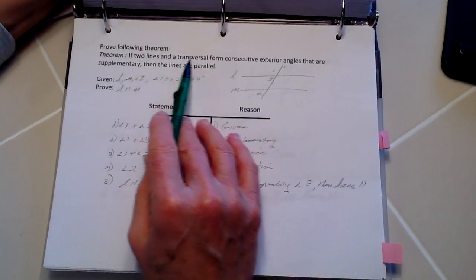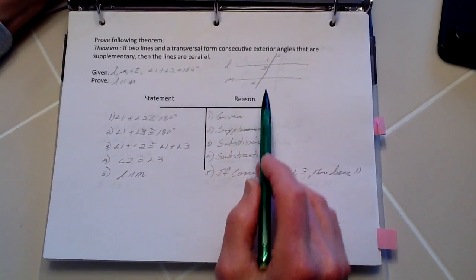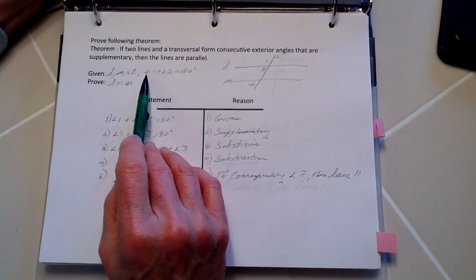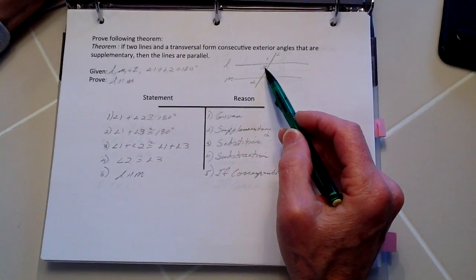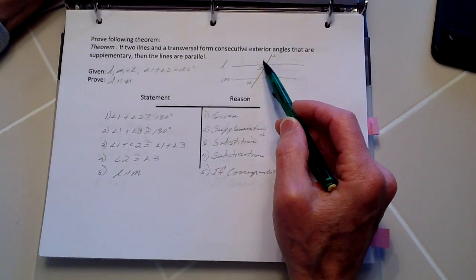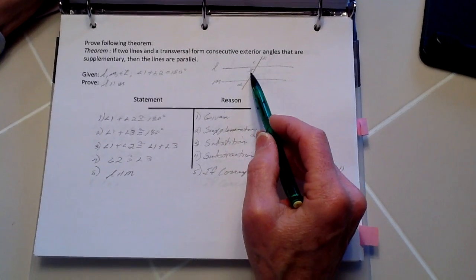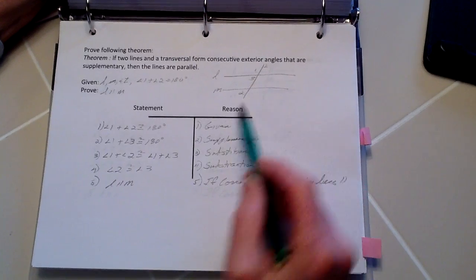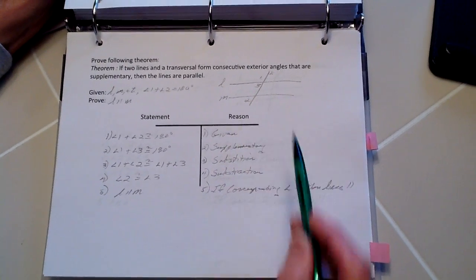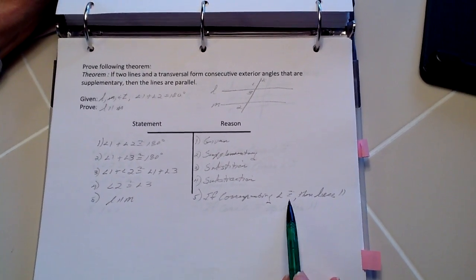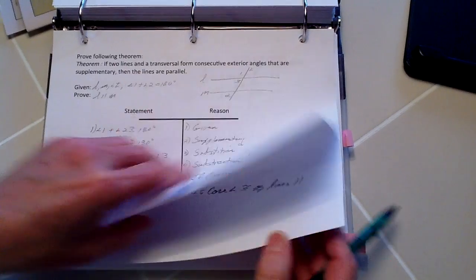Next, if two lines and a transversal form supplementary consecutive exterior angles — angles one and two equal 180 degrees — we also know angles one and three equal 180 degrees. Setting these equal and subtracting angle one from each side, angles two and three are congruent corresponding angles, and therefore the lines are parallel.